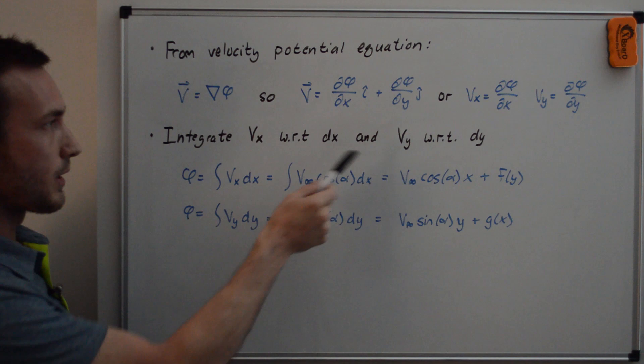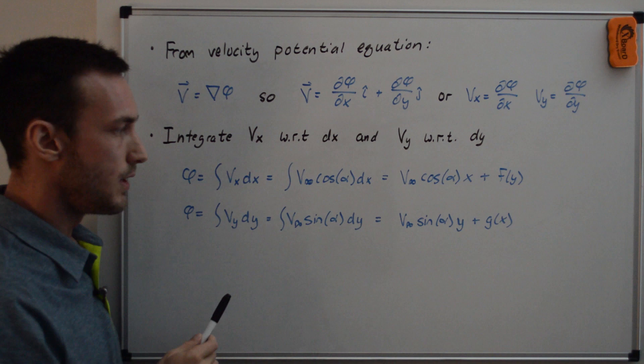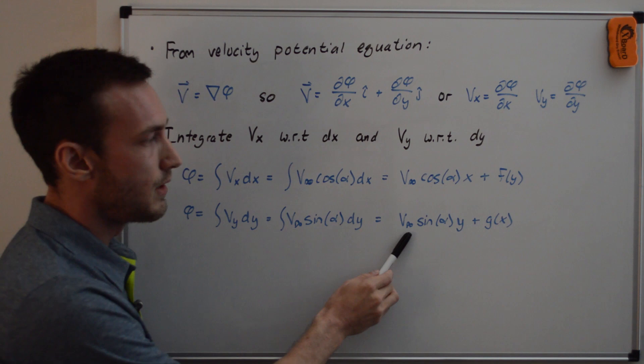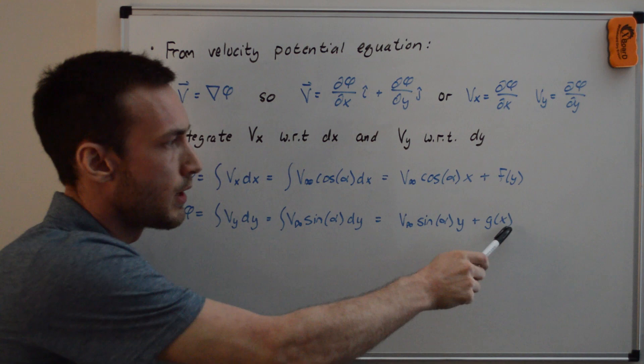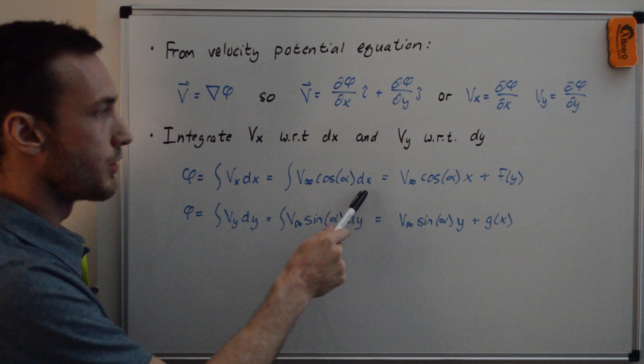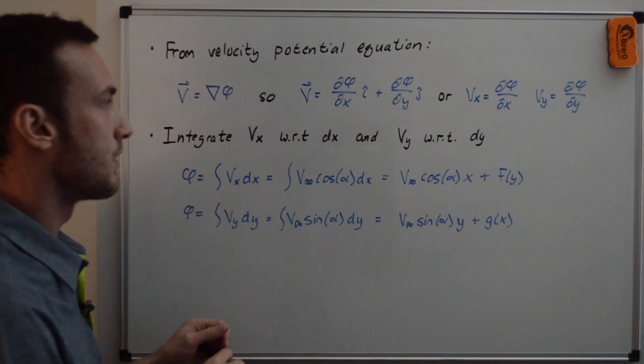Similarly for phi with respect to y, we have integral of vy dy, which equals v infinity sine alpha dy. Integrating, noting that these are constants, so we just get v infinity sine alpha y plus some function of x. And the reason we have the function of y and the function of x is because phi is a function of both x and y, but when we were integrating here, we were just integrating with respect to x or with respect to y.